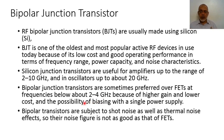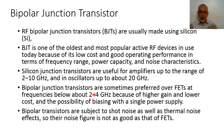Field effect transistors at the low frequency range of 2 to 4 GHz have higher cost, may require two power supplies for biasing, and the gain of the field effect transistor in this low frequency range would be less than that of the bipolar junction transistor.